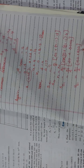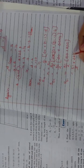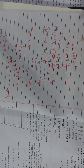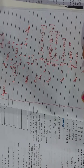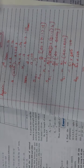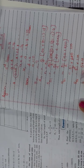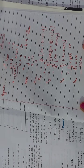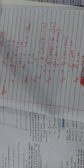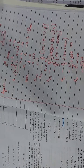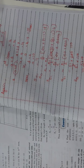So S51 equals 51 by 2 into 20 plus 200. That is 51 by 2 into 220. We know that 220 divided by 2 is 110, so S51 equals 51 into 110, which equals 5610. Hence, the sum of 51 terms of the AP is 5610.